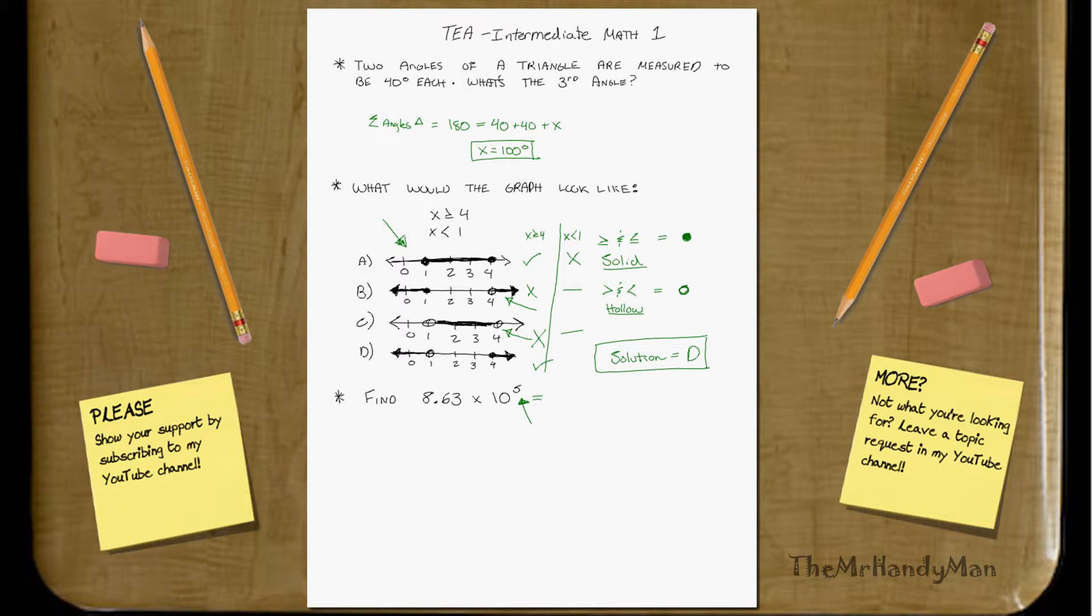So just basically move the decimal point 5 times to the right. Now if 5 was negative, then you'd be moving it to the left. But in this case it's positive, so we're going to move it to the right.